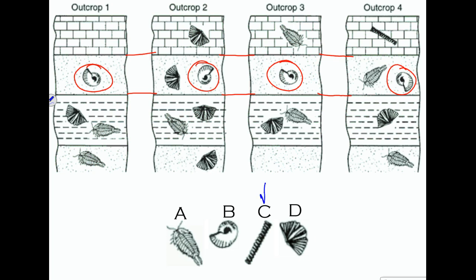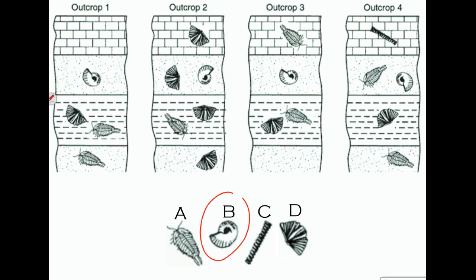Fossil C is only found in one location — just in outcrop number four. We want it to be geographically widespread, so if it's found in just one spot, it doesn't help us. And fossil D is found in many different locations — outcrops one, two, three, and four — which is great. But in outcrop two, it's found in both old rock and young rock, so I'm not sure where it matches up to. That leaves us with the correct answer: B is our best index fossil.